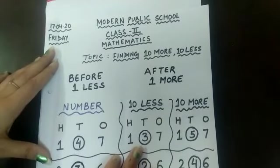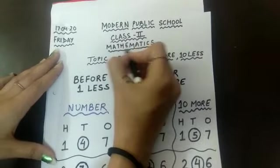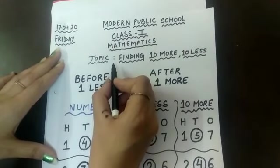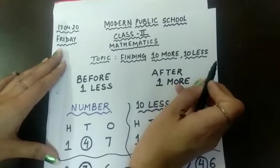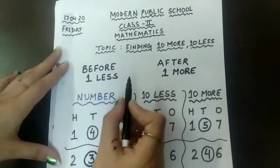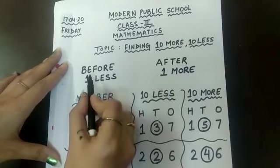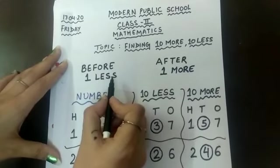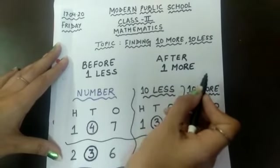Hello Modernites, I hope you are staying indoors and staying healthy. Today for Class 2 Mathematics, the topic we are taking is finding 10 more and 10 less of a number. Students, you have already understood about before and after numbers. Before tells us one less of a number, and after tells us one more of a number.